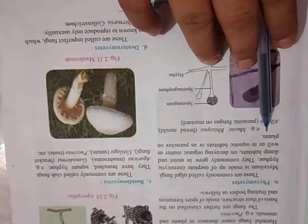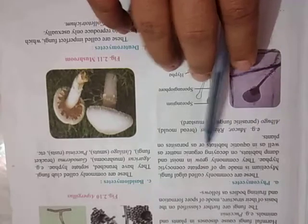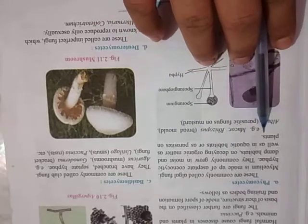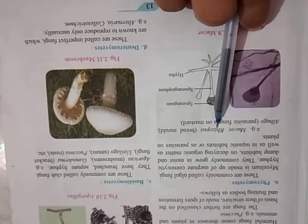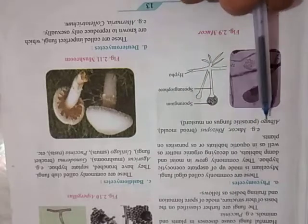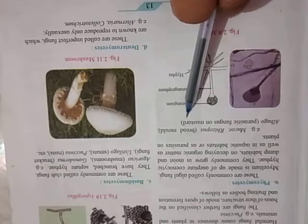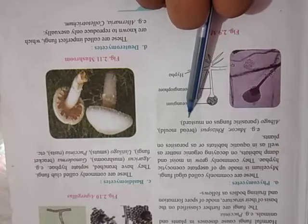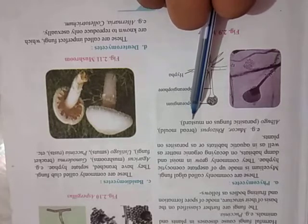These are the habitats of the Phycomycetes. For example, Mucor and Rhizopus, which is the bread mold, and Albugo, which is parasitic fungi on mustard. These are examples of the Phycomycetes. These examples are important; you have to remember all these examples.